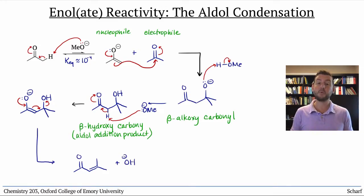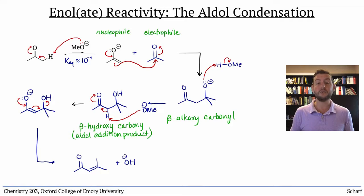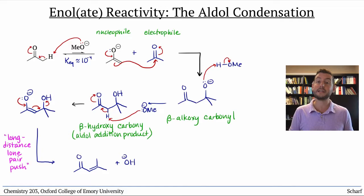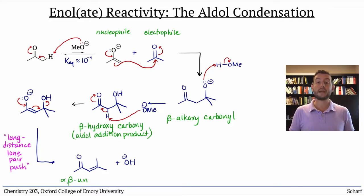Normally, hydroxide is a poor leaving group in SN1, SN2, E1, and E2 reactions. But in this context — elimination from an enolate — the power of the long-distance lone pair push is enough to kick it out. Don't be tempted to draw this as an E2 elimination. This last step is driven forward by the fact that we make an alpha-beta-unsaturated carbonyl compound, a stable, conjugated system.